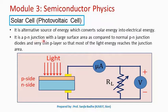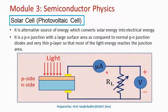This solar cell is nothing but a p-n junction with a large surface area as compared to a normal p-n junction diode. This large surface area enables the solar cell to absorb more amount of light energy, and more of that light energy can be converted into electrical energy. Additionally, the p-layer is very, very thin.